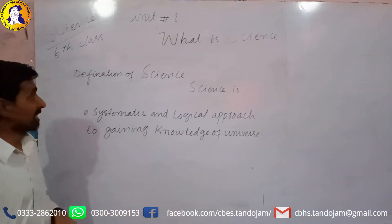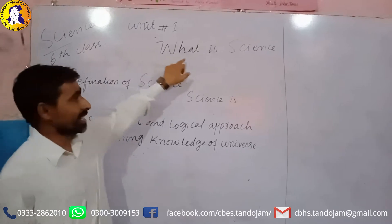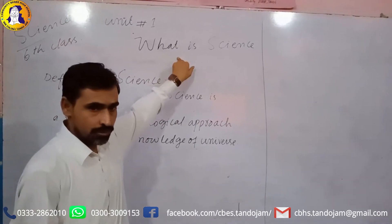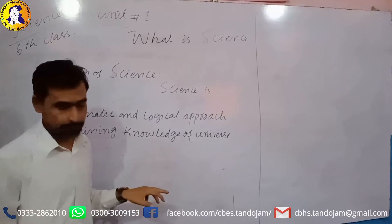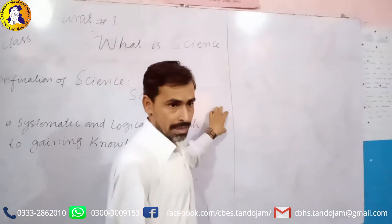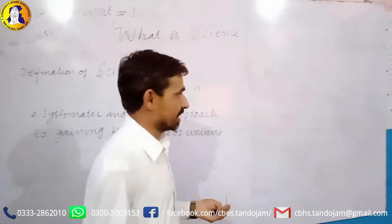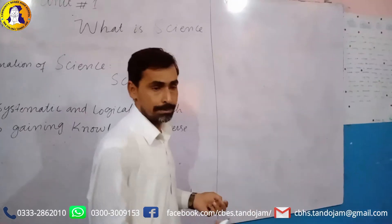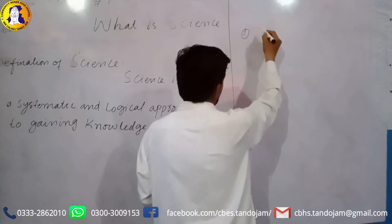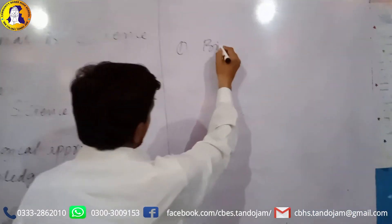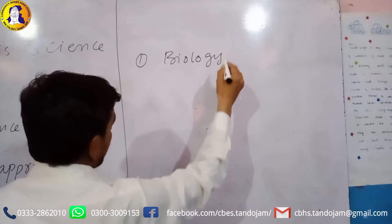Today we are going to discuss the class six science, year number one: what is science. Before discussion of science, we are going to make the introduction of our book. Our science book consists of three sections, which means the three branches of science. The first section is biology, the second one is chemistry, and the third one is physics.